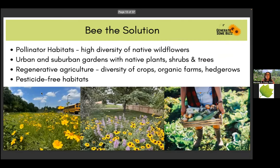What we do is invite you to be the solution. Create pollinator habitats with high diversity of native plants in urban and suburban gardens. Plant native plants, native trees and shrubs. If you have a choice, please choose regenerative agriculture, buy your food from organic farms with diversity of crops and hedgerows that create habitat for pollinators, and of course make sure not to use pesticides.